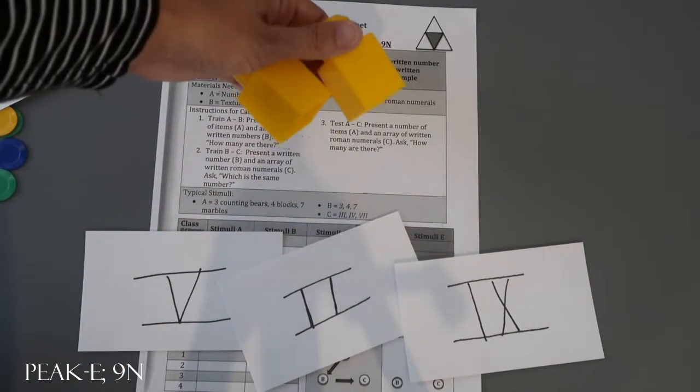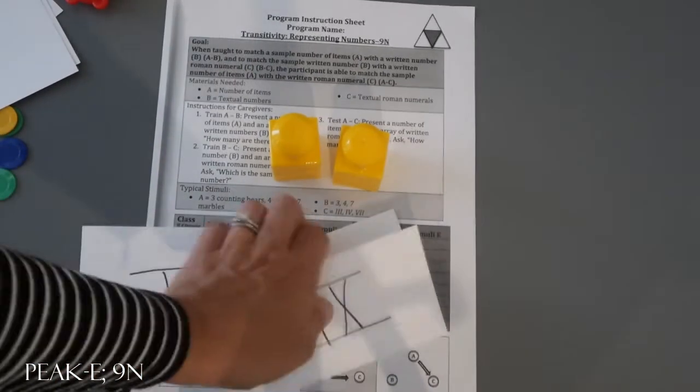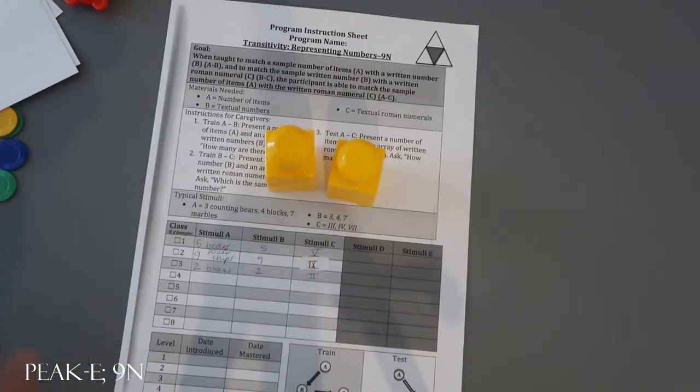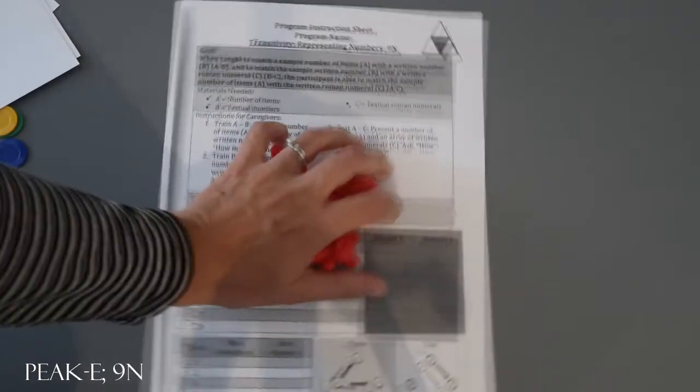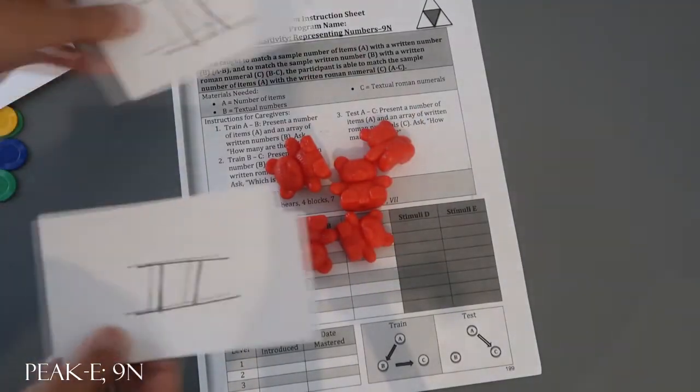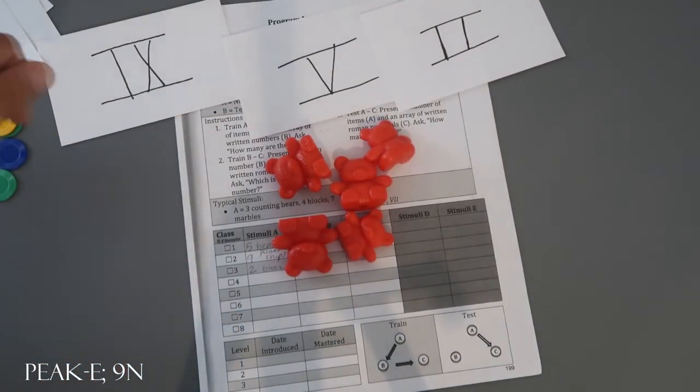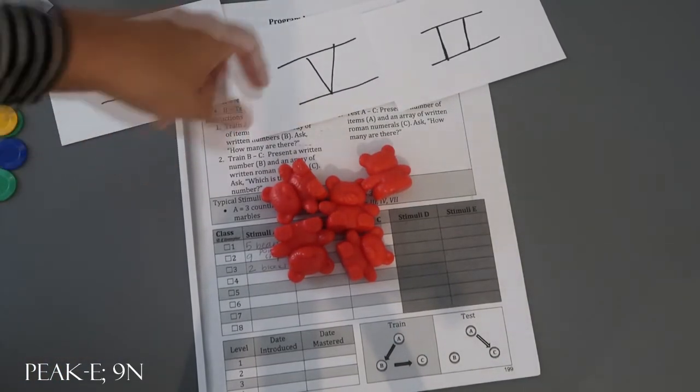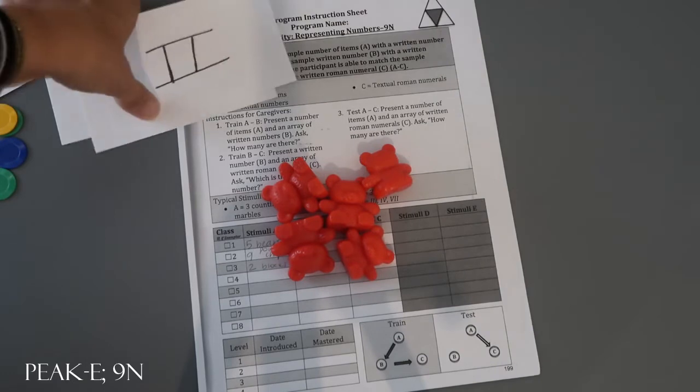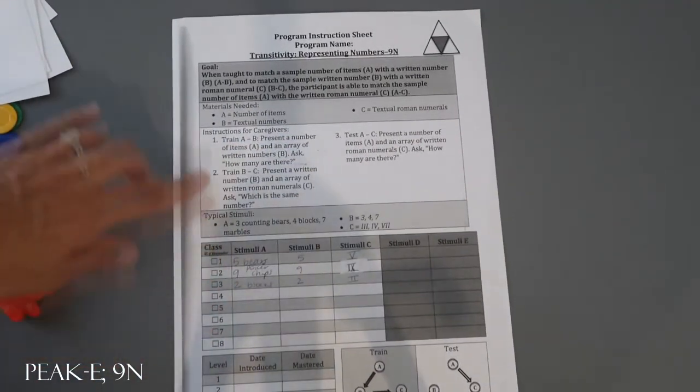You're going to ask the participant how many are there. This would be the correct answer. You're scoring zero or ten for this block and running those ten trials. Another trial might be with the bears out and the numbers in front of the participant, asking how many are there. This would be the correct answer because there are five. You wouldn't give feedback, prompt, or reinforce—just testing, marking zero or ten for that trial.